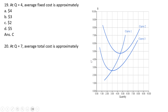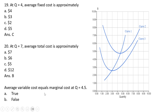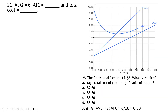At q equals 7, average total cost is approximately — at 7 units of output we look up to curve 2, which is average total cost. This is a little bit over $6, so rounding, average total cost is approximately $6. Answer choice B. True or false: average variable cost equals marginal cost at 4.5 units of output. At 4.5 units of output, marginal cost equals average total cost, so this is false. Where marginal cost equals average variable cost, that's a little under 3 units of output.